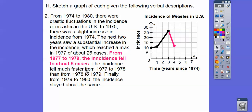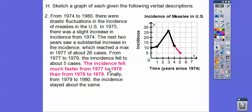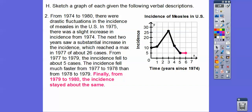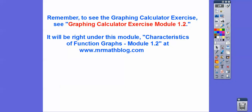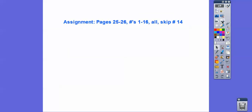From 77 to 79, the incidence fell to about 5 cases, with the drop much faster from 77 to 78 than from 78 to 79. Finally, from 79 to 80, the incidence stayed about the same, so we draw a flat line there. Remember, the graphing calculator exercise immediately follows this lesson. If you're in my class, I'll assign that. Take care, bye.